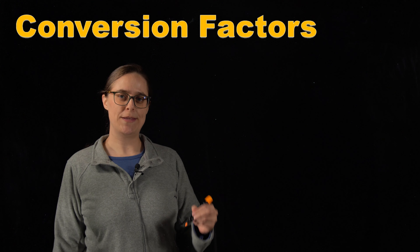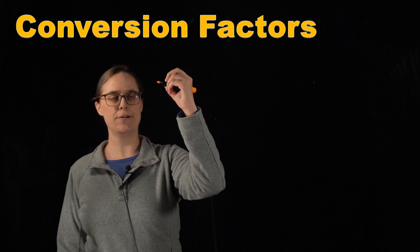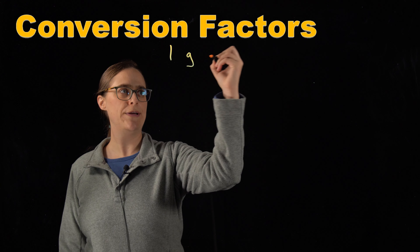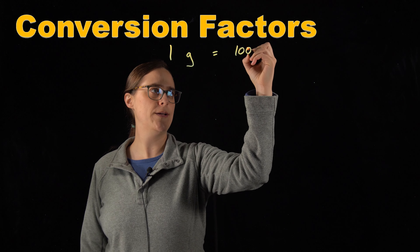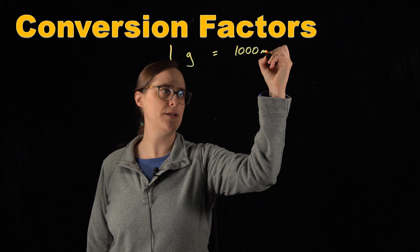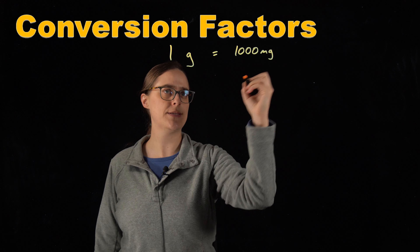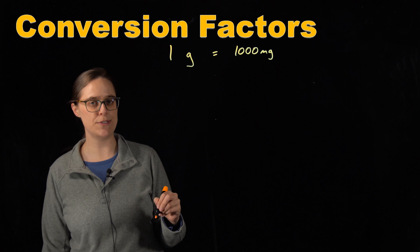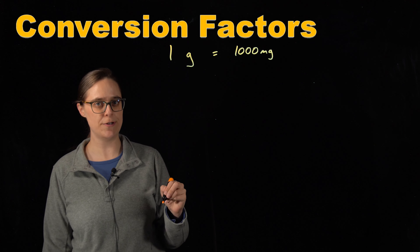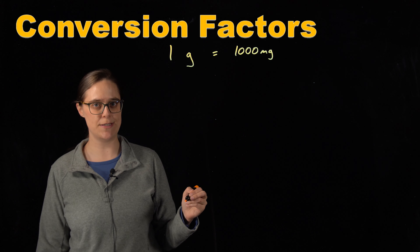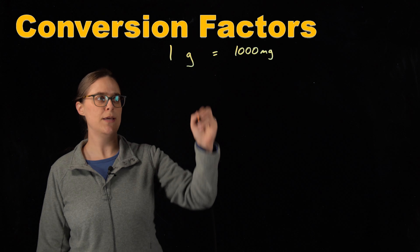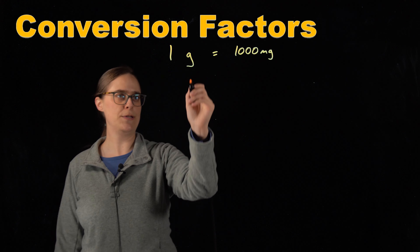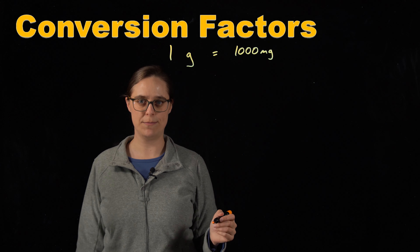The factor label method starts with a conversion factor. For example, one gram is equal to 1,000 milligrams. These are two quantities that are not equal to zero, with different units that are the same as each other. We can use this information to convert between units of grams and milligrams.